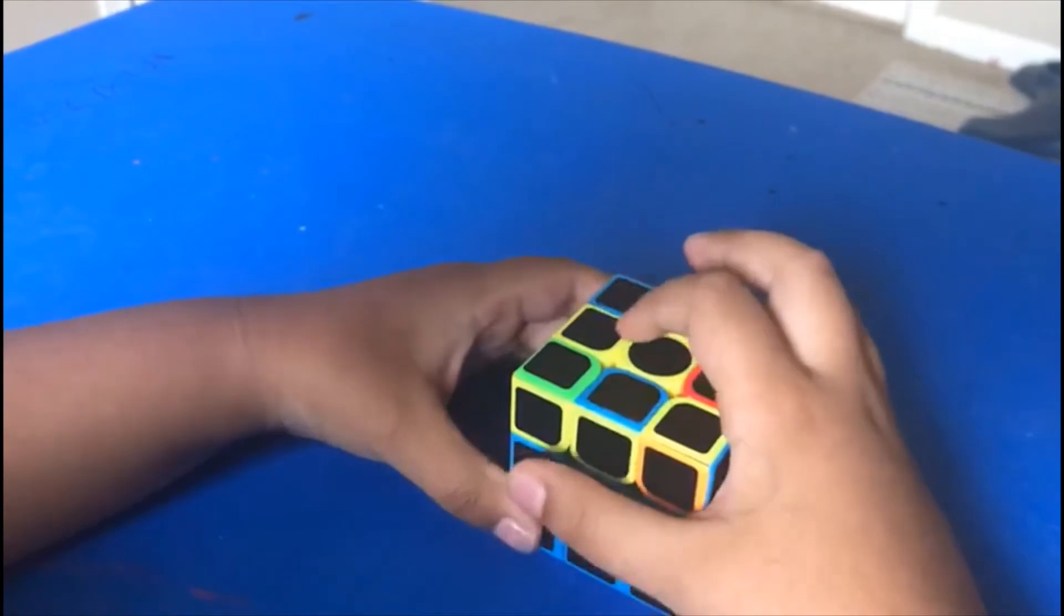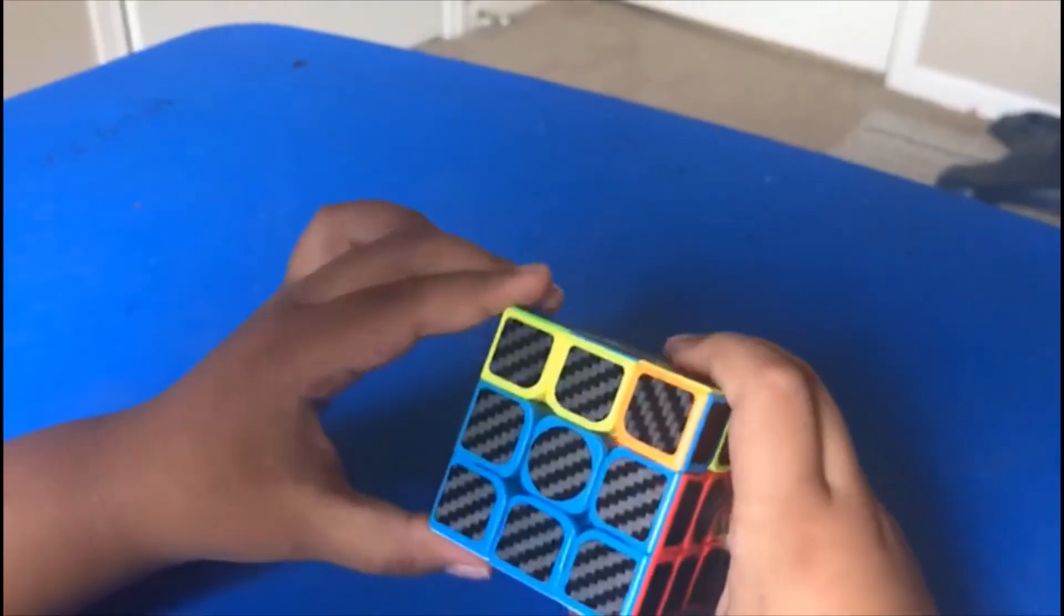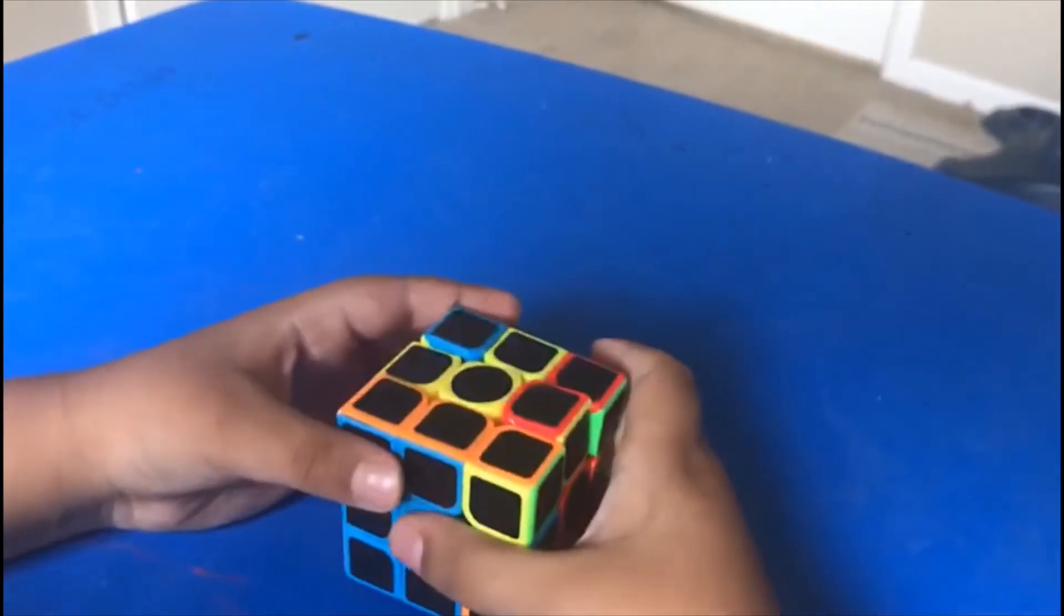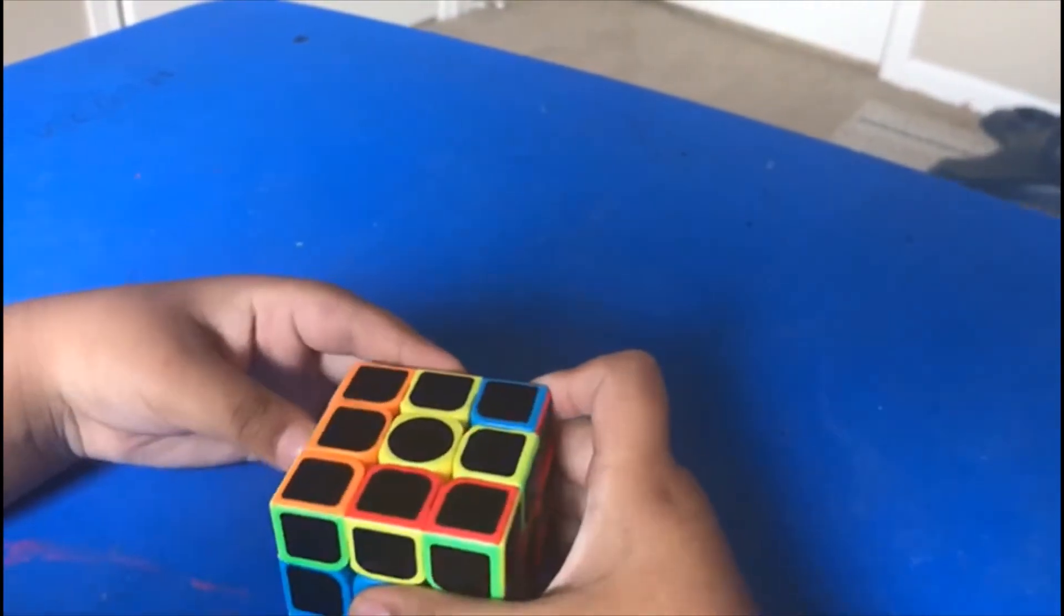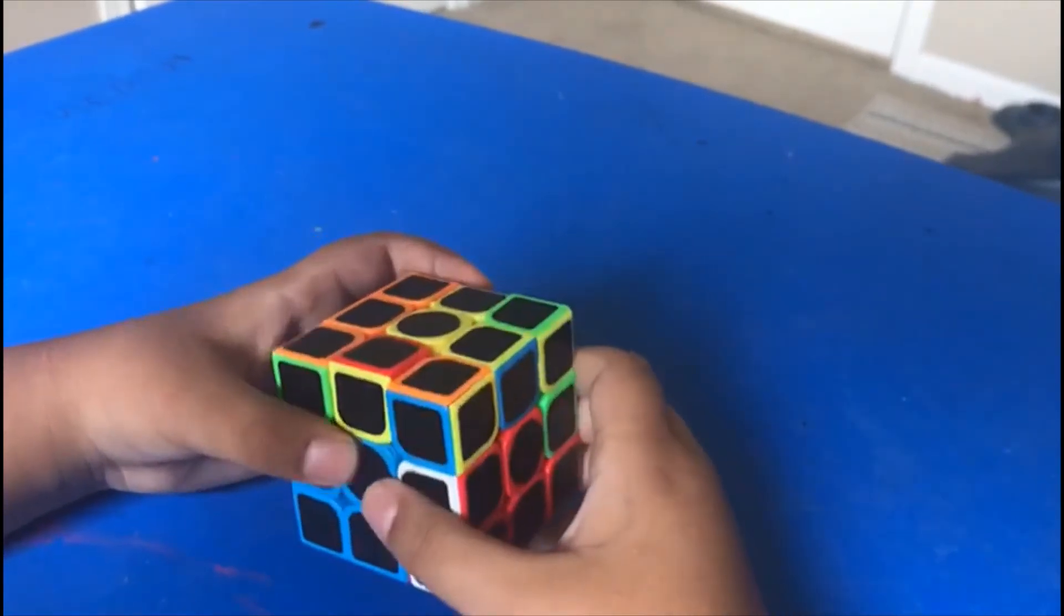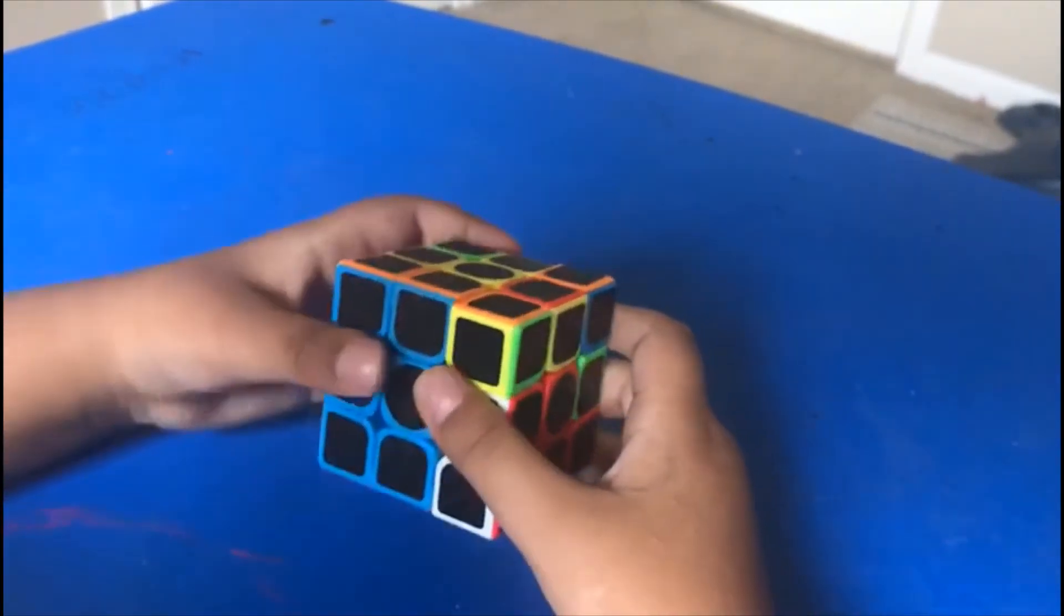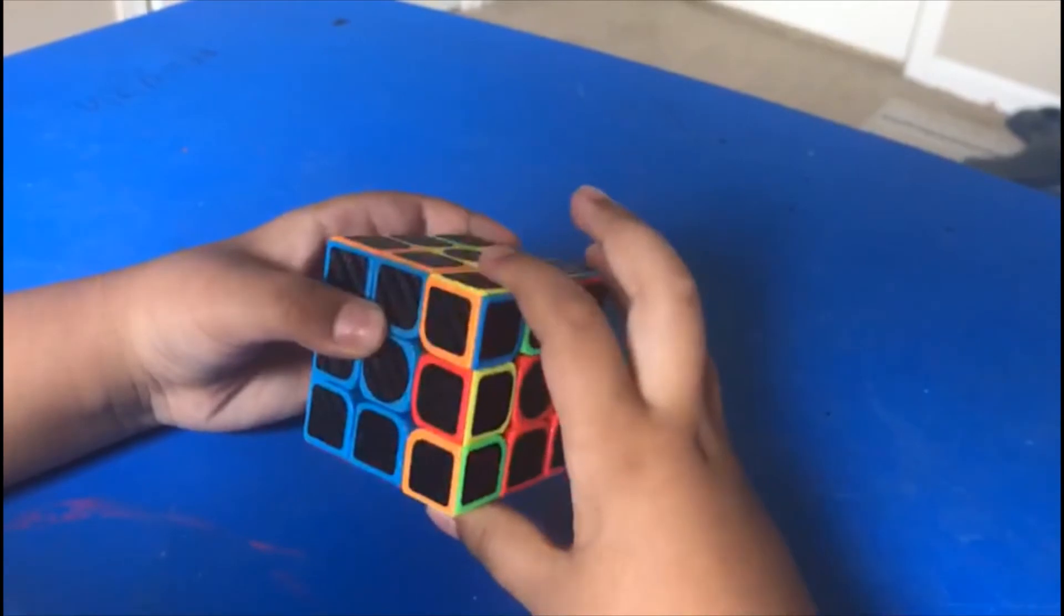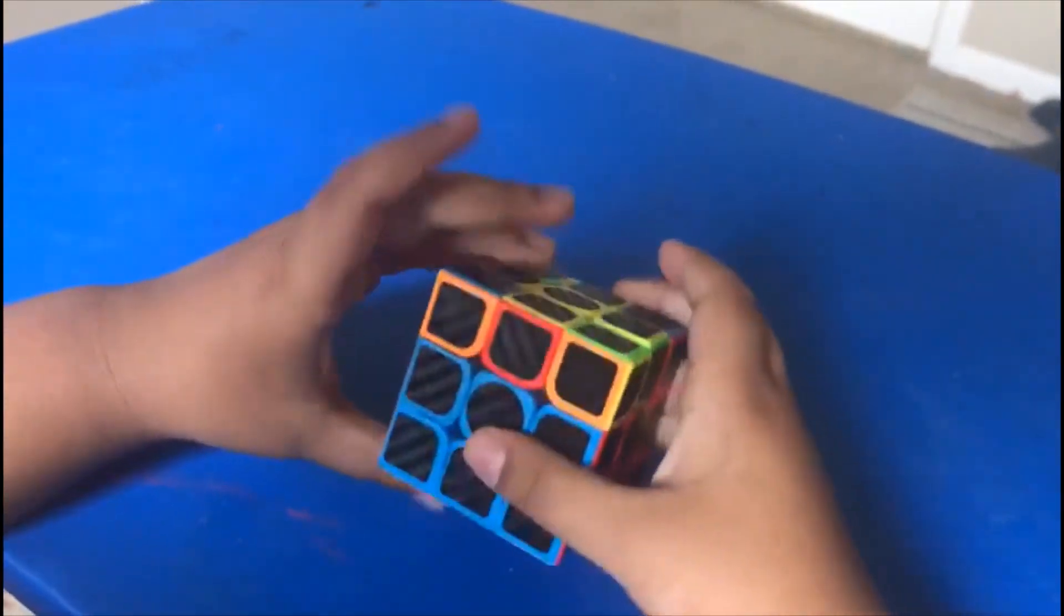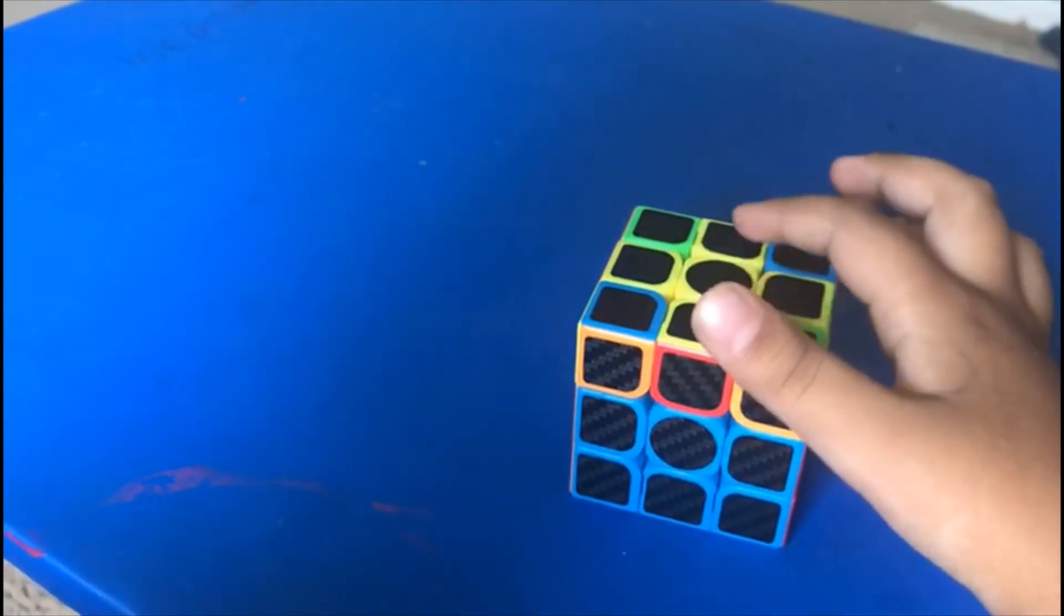It's 9, 12. Apply F, U, R, U prime, R prime, F prime. Now we got the yellow cross.